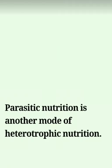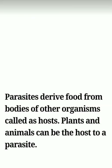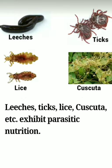Now let us learn about parasitic nutrition, which is another mode of heterotrophic nutrition. Here the organism depends on a host for its food requirements — the parasite derives food from the bodies of other organisms called hosts. Plants and animals can both be hosts to a parasite. Examples of parasitic organisms include leeches, ticks, lice, and Cuscuta.